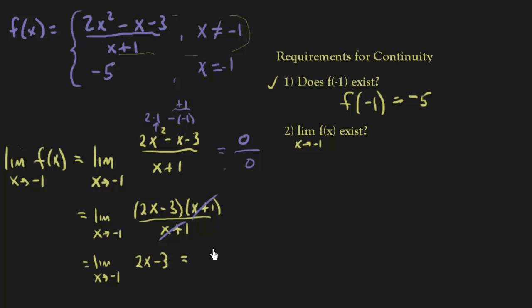Now when we plug in negative 1 we get 2 times negative 1 minus 3 and that's negative 5. So the limit exists, so that's a check and it equals negative 5.